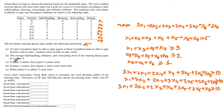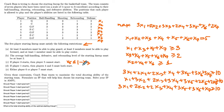Part C: if player 3 starts, then player 5 cannot start. If x3 = 1, then x5 must equal 0. We express this as x5 ≤ 1 − x3. Whenever x3 is 1, this implies x5 must be 0. Whenever x3 is 0, player 5 can either start or not. This constraint is equivalent to x3 + x5 ≤ 1. Part C is done.